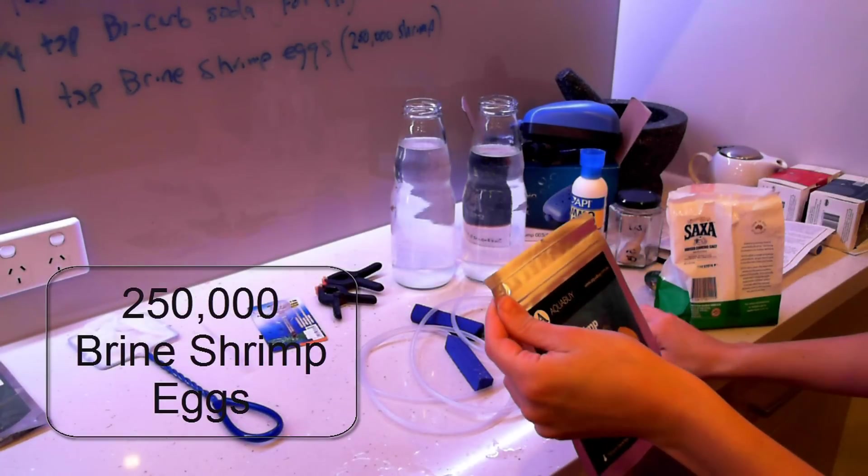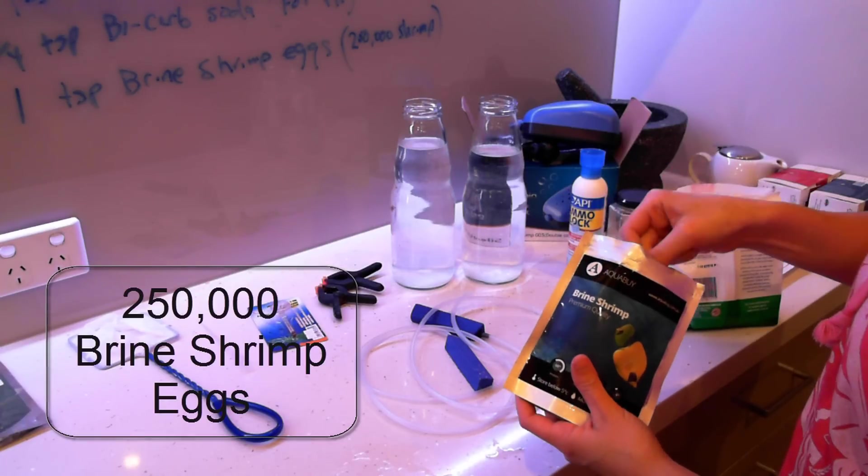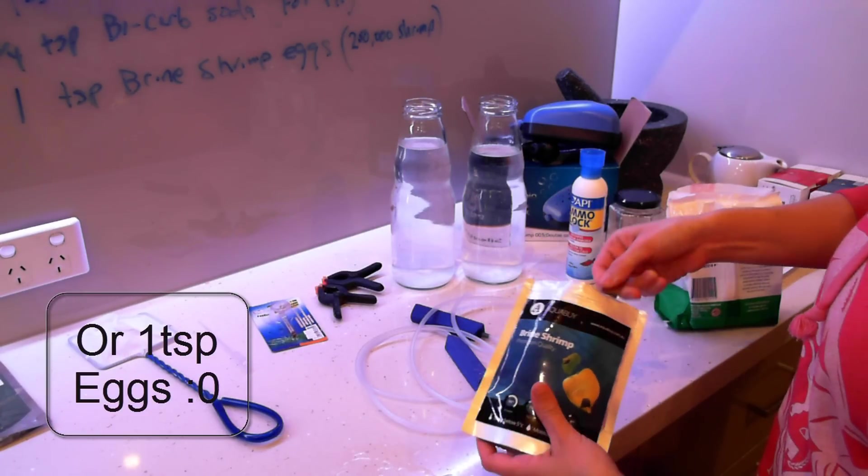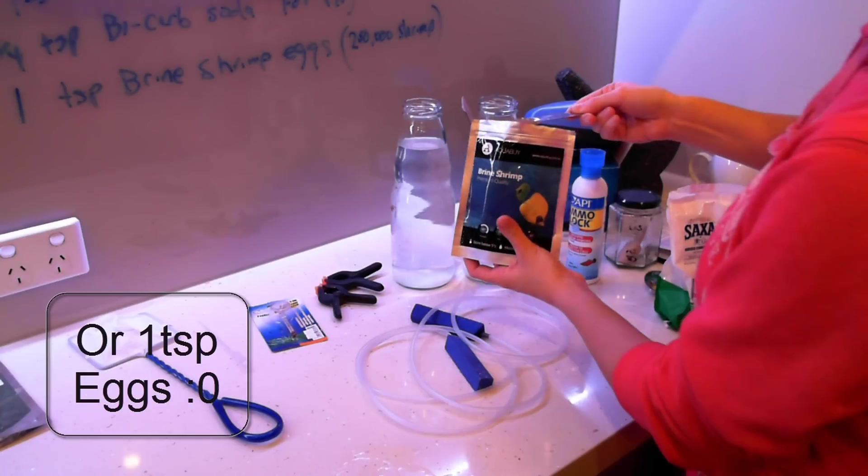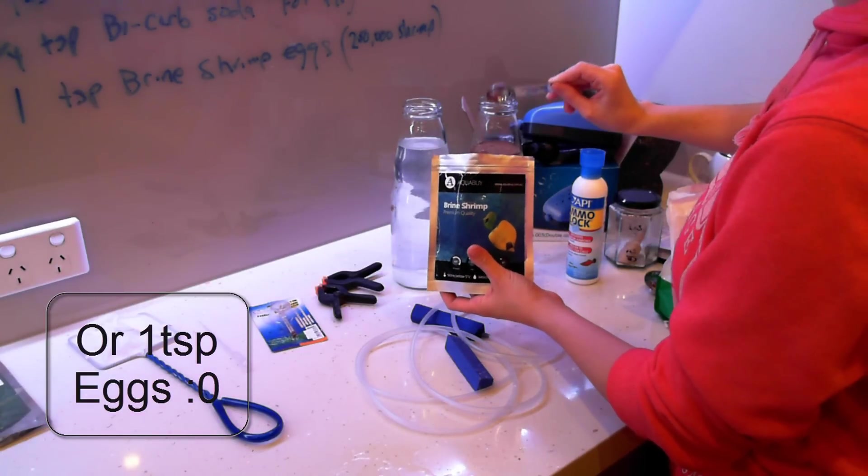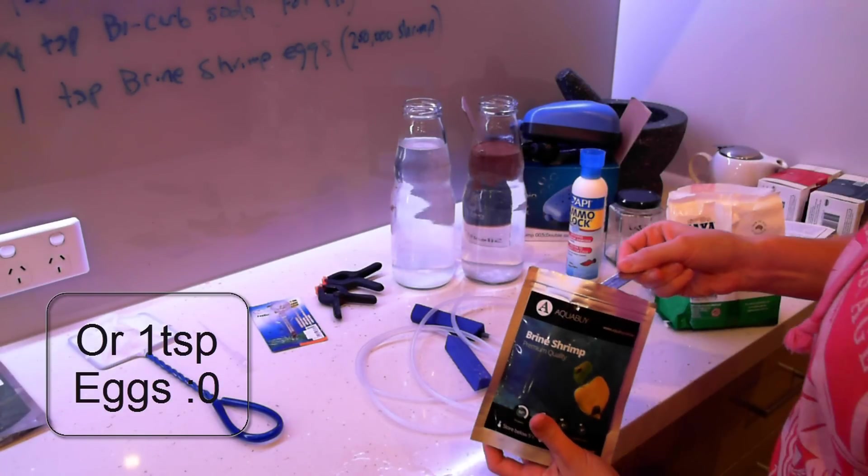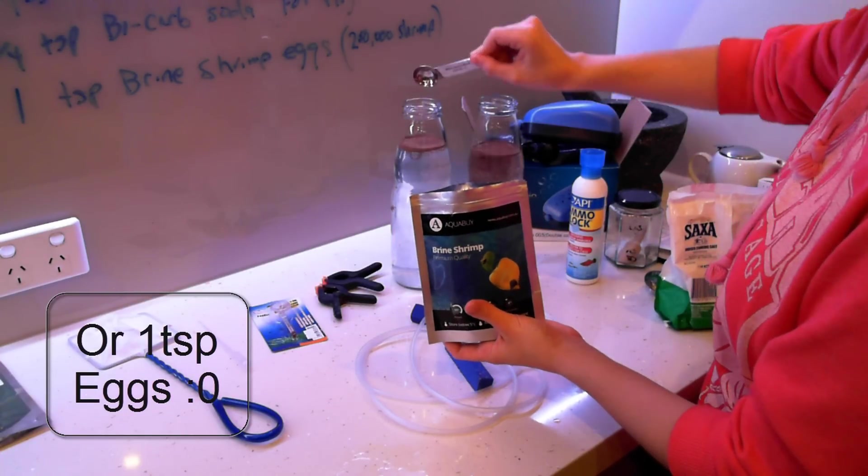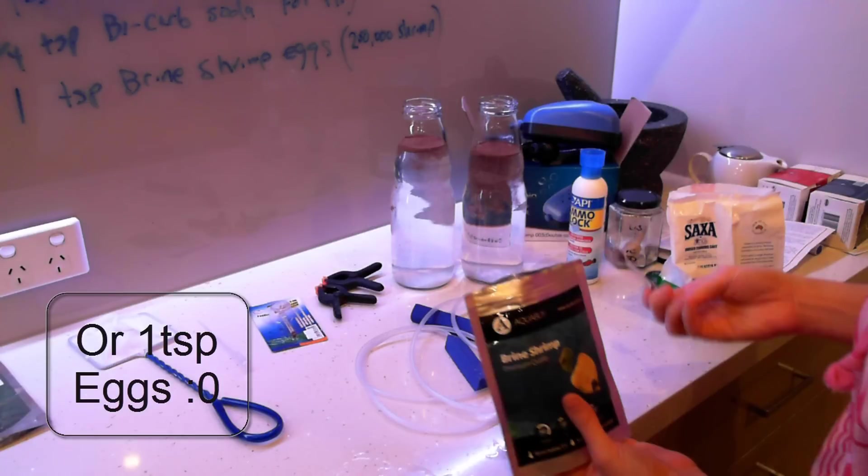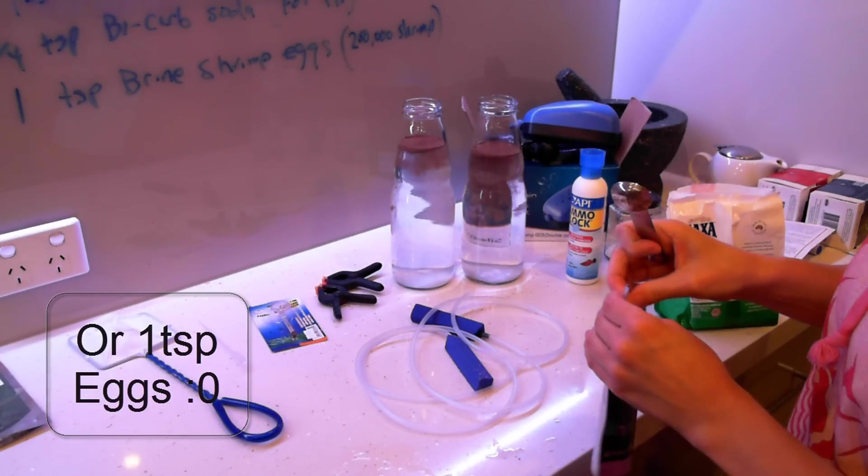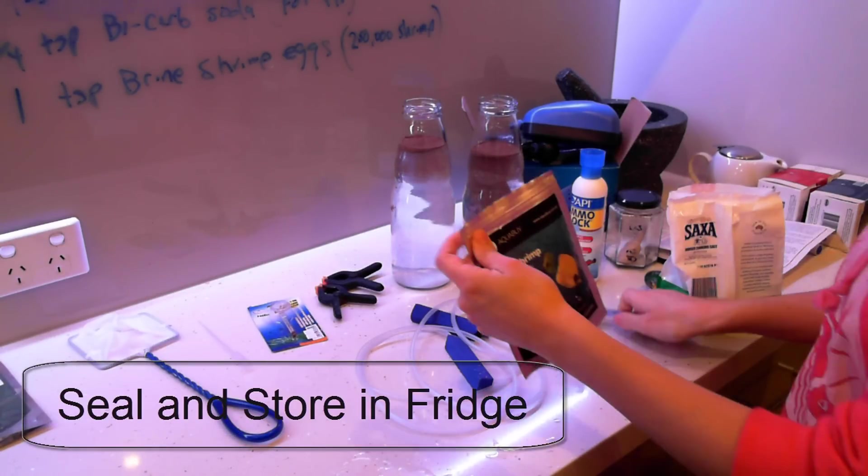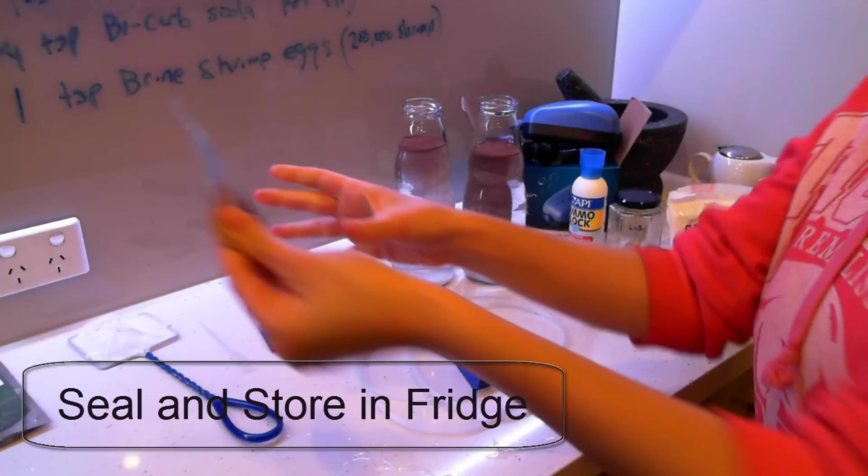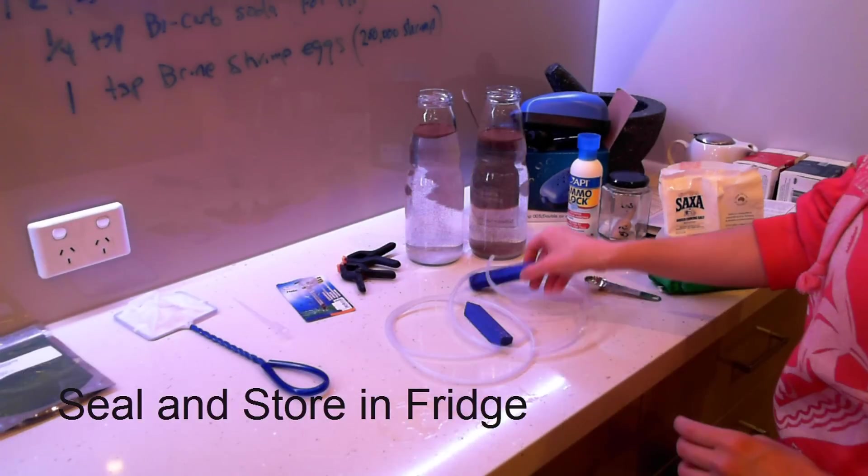Now here comes the exciting part. We're going to add our brine shrimp eggs. Just one little teaspoon per liter bottle should be sufficient. Just a little note here. The first time I did this, I did not seal the bag completely, and I was very disappointed that it actually ruined my batch. Make sure you seal it completely. Otherwise, the moisture gets in and they won't hatch. You'll be very disappointed.